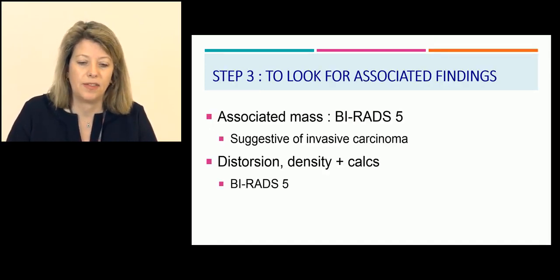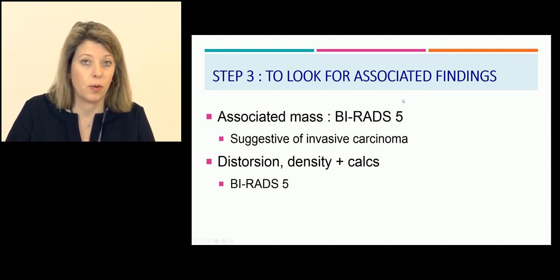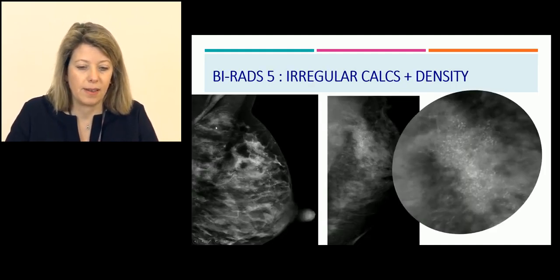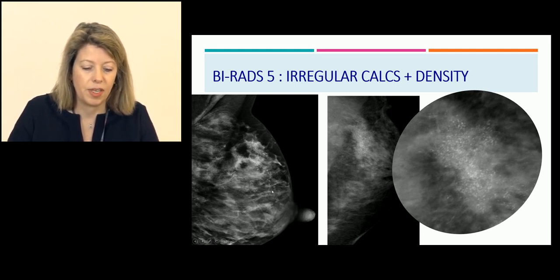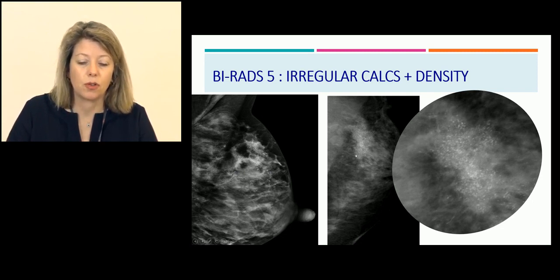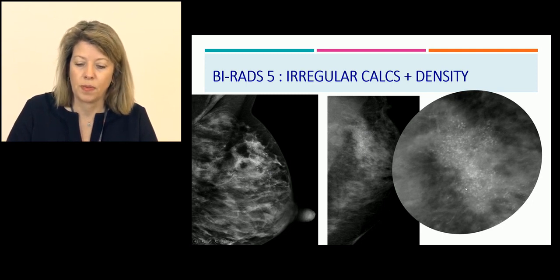Step 3: you have to look for associated findings. If you find a suspicious mass associated with an irregular calcification cluster, categorize as BI-RADS 5 — usually suggestive of invasive carcinoma. When you have suspicious calcifications with distortion and density associated with the calcifications, it could also be categorized as BI-RADS 5, typically malignant. Here are examples: very suspicious calcifications due to number, density, and pleomorphism — irregular with triangular orientation, associated with density — this was an invasive DCIS. Another case also showed calcifications associated with dense tissue, very suspicious on magnification views — also DCIS.